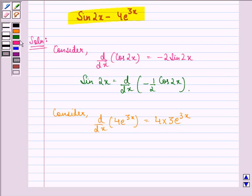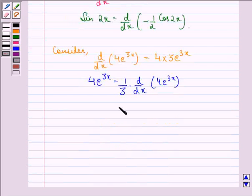So we can say that 4 into e raised to power 3x is equal to 1 by 3 into d by dx of 4 into e raised to power 3x. Or we can write it as d by dx of 4 by 3 into e raised to power 3x.